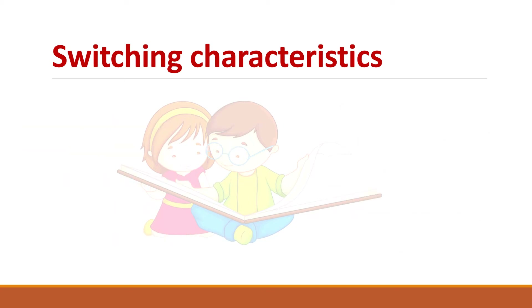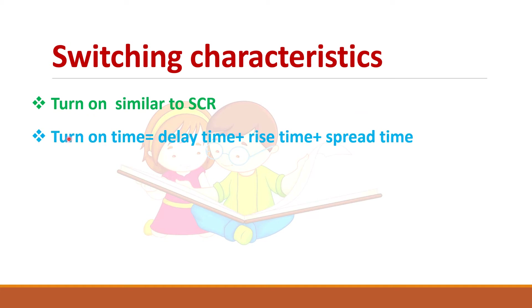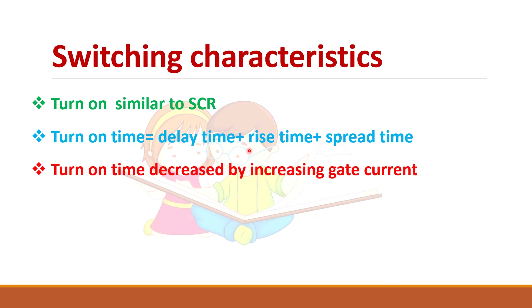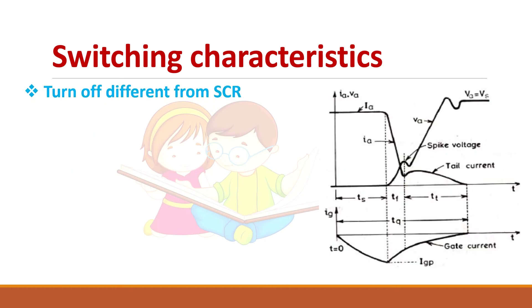Looking at switching characteristics: the turn-on characteristics are similar to an SCR because we are giving a positive gate current to turn it on. Turn-on time equals delay time plus rise time plus spread time — for more detail, refer to the switching characteristics of SCR video. The turn-on time can be decreased by increasing the gate current. The turn-off characteristics are completely different from the SCR because here you are giving a negative gate current to turn off the GTO.